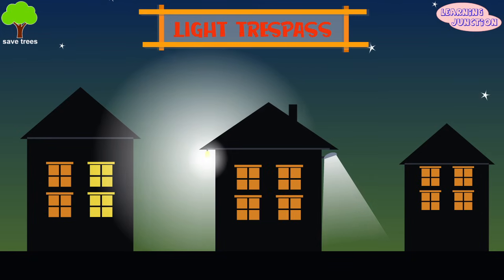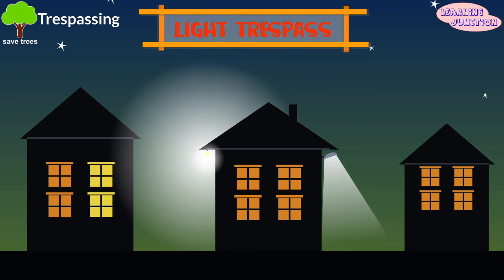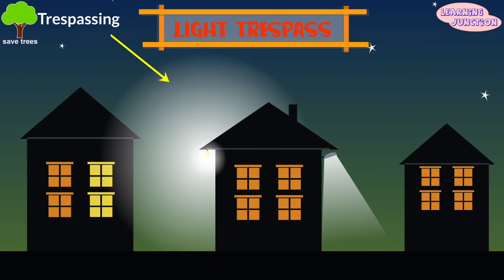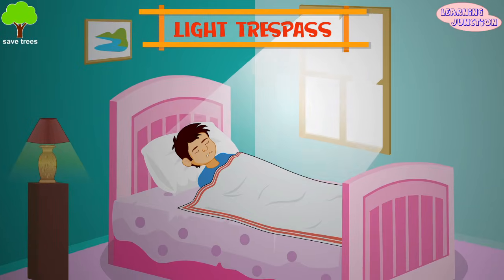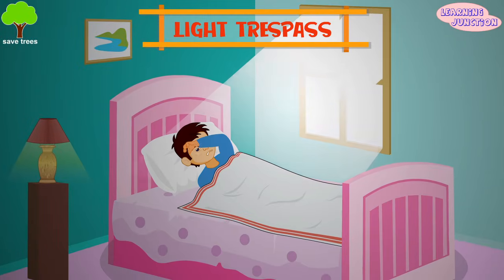Light trespass — it is the light falling where it is not intended or needed. How bad you feel when your neighbour's security lights are shining through your bedroom windows and lighting up your room all night.